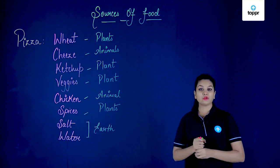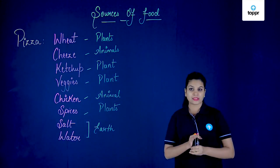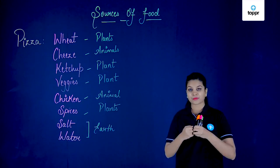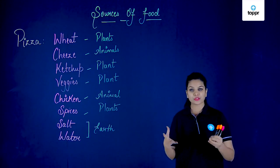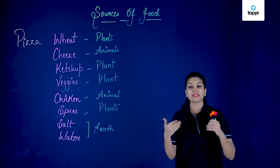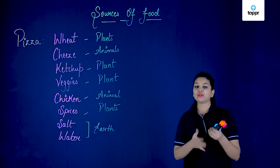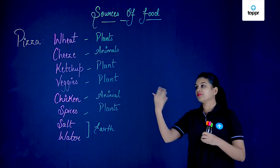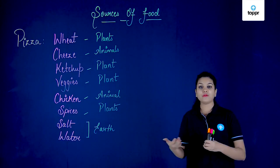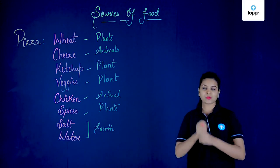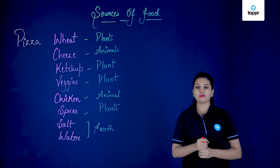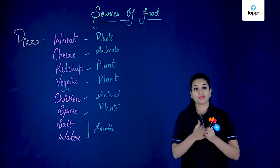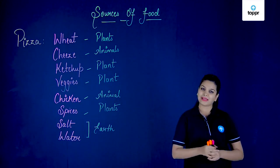So plants and animals act as the major sources of our food. Plants, as we know, perform photosynthesis to make their own food, so we can call them producers because they are producing the food. On the other hand, animals eat these plants and then give us a number of animal products. Let's have a look at the different types of products we can get from plants and animals.